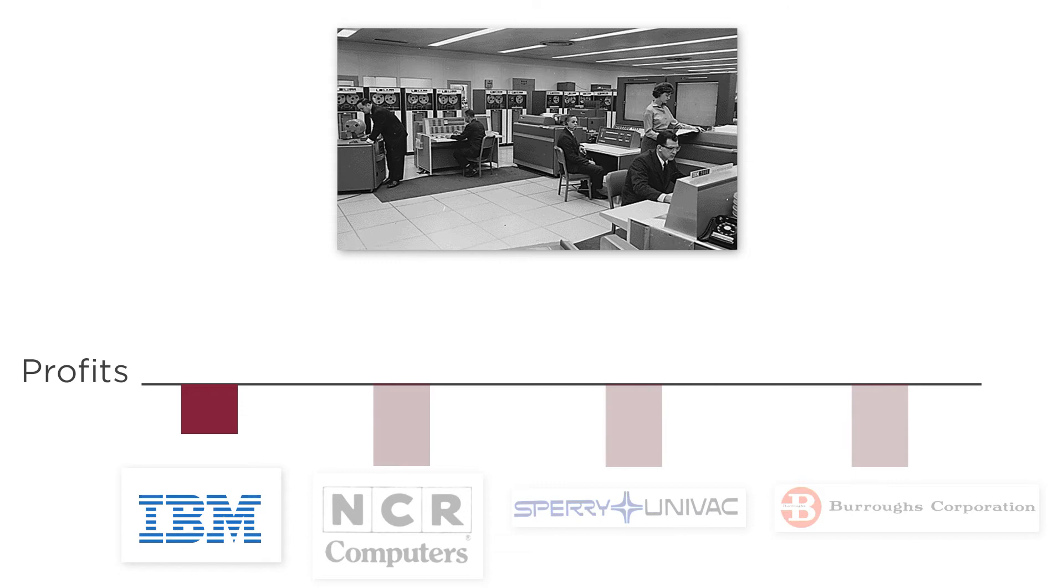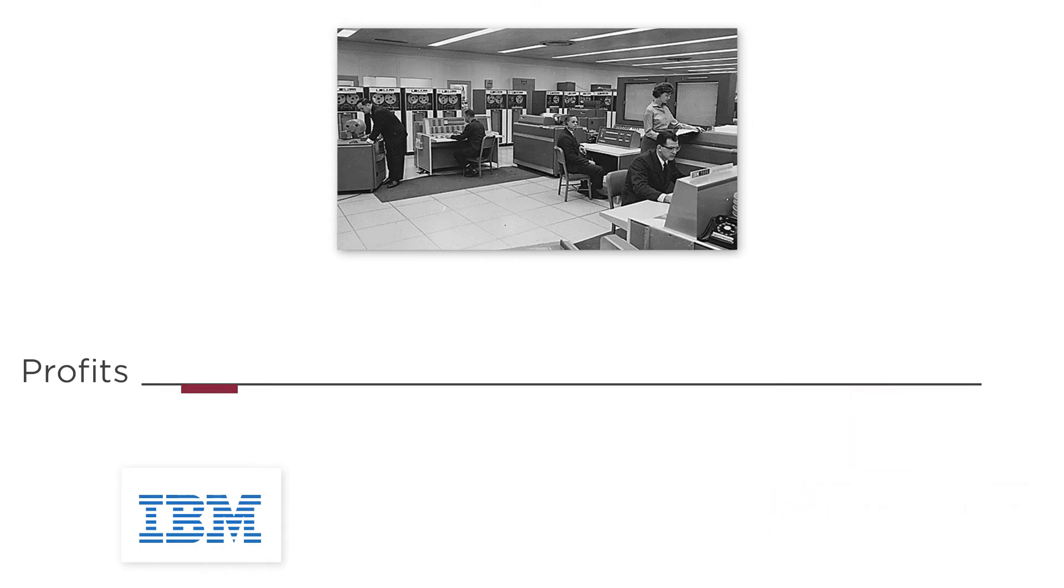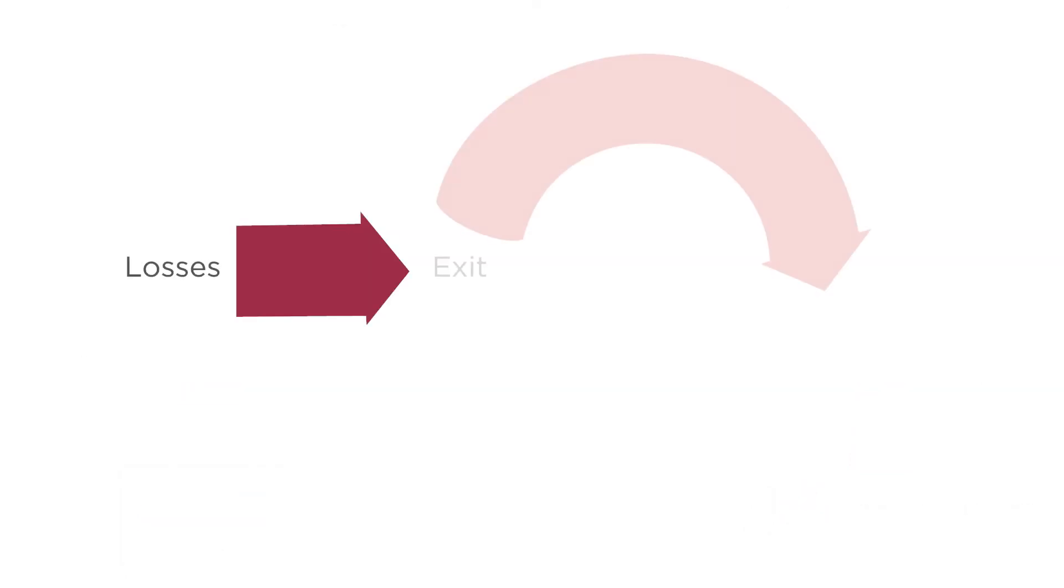And what happens as each existing firm exits the market? The price of mainframes can go up, and the loss of the remaining firms, such as IBM, gets smaller. Firms see they are losing money and exit the market, and market losses fall. But if the firms remaining are still experiencing losses, more firms will exit, making losses even lower for the firms that are left.